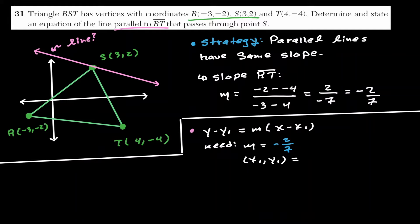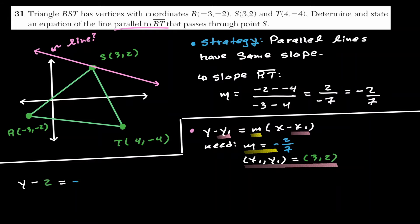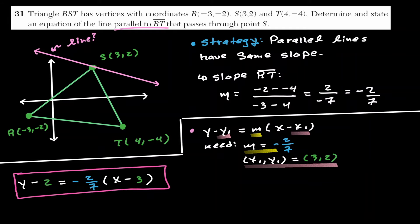Using point-slope form y − y₁ = m(x − x₁), with slope m = −2/7 and passing through point S at (3, 2), we plug in x₁ = 3 and y₁ = 2. The instructions do not require simplification, so this is the equation of the line parallel to RT passing through S.